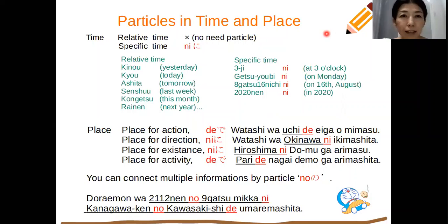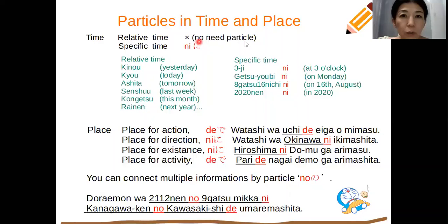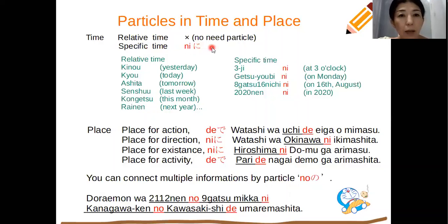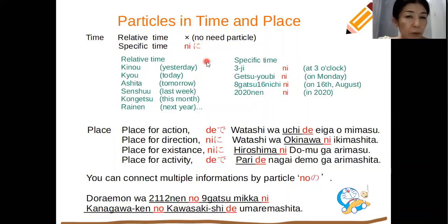皆さんこんにちは. In this lesson I will explain particles in time and place. First, for time there are two choices. The first is relative time — no particle is needed. The second is specific time, where you put に after the time information. Relative time means like yesterday, today, tomorrow — it's changeable depending on where you are.